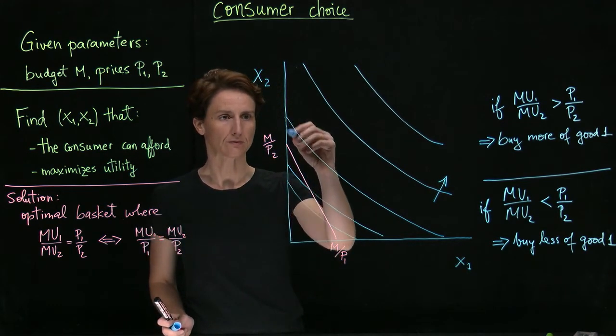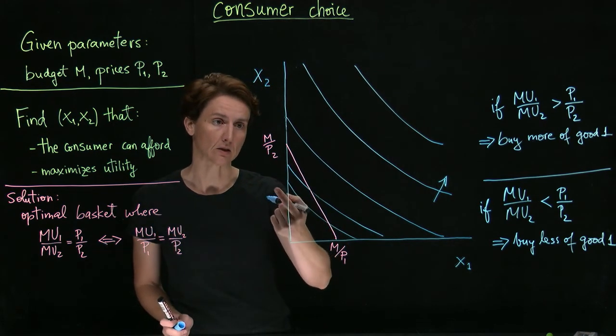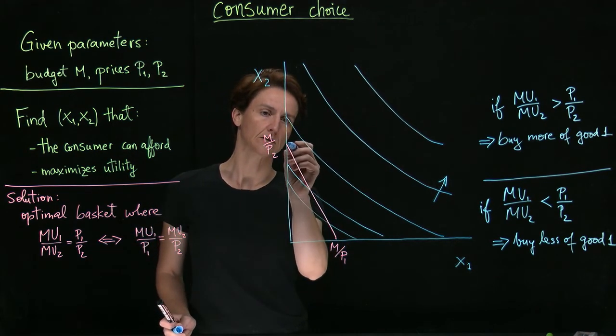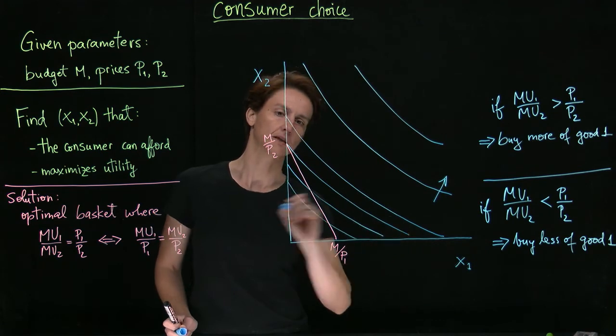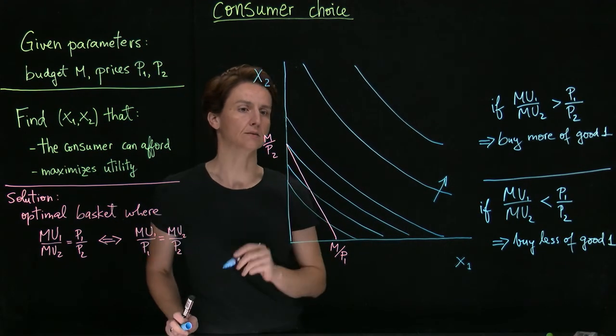in the hopes that we will find somewhere a tangency point. But there's no guarantee that we will. It's possible that we get to the intersection with the axis and the indifference curve that goes through there is still flatter than the budget constraint.